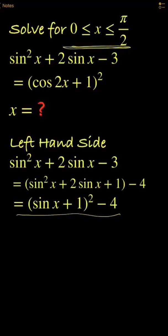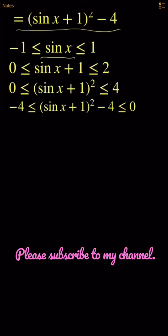The left hand side is transformed to (sin x + 1)² - 4. Obviously, (sin x + 1)² - 4 must be between -4 to 0.